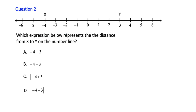Question 2. It says: which expression below represents the distance from x to y on the number line? I see the word distance. Whenever you see distance, your answer will be positive — there's no such thing as negative distance. These symbols represent distance or absolute value. So when you see these symbols with distance, this is how you symbolically write it. My answer probably has to include these distance symbols. The only two that include those are C and D. A and B do not include these distance symbols, so I can probably eliminate A and B.